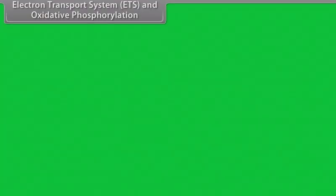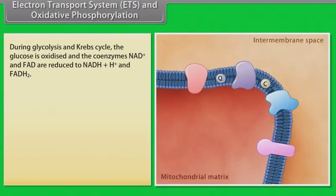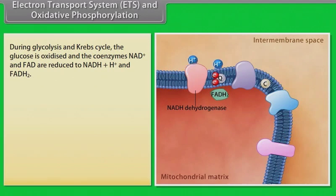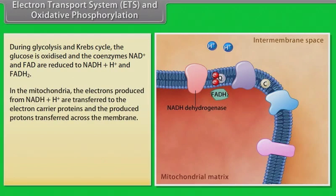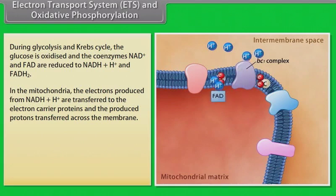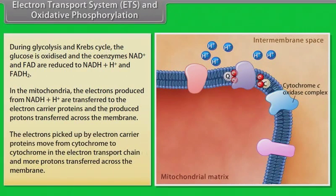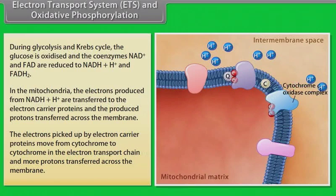Electron transport system (ETS) and oxidative phosphorylation: During glycolysis and the Krebs cycle, glucose is oxidized and the coenzymes NAD⁺ and FAD are reduced to NADH+H⁺ and FADH₂. In the mitochondria, electrons produced from NADH+H⁺ are transferred to electron carrier proteins, and the produced protons are transferred across the membrane. The electrons move from cytochrome to cytochrome in the electron transport chain, and more protons are transferred across the membrane.